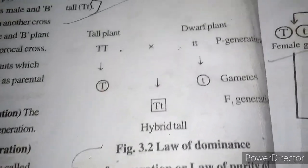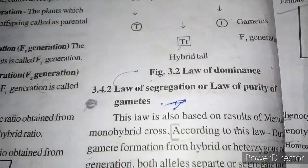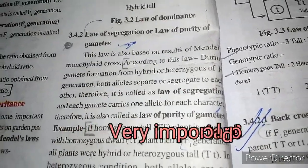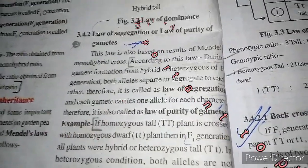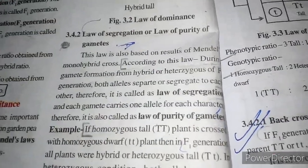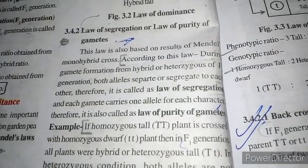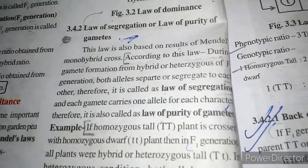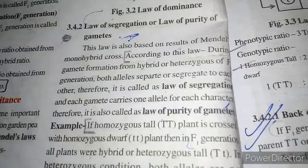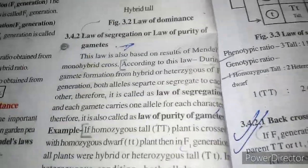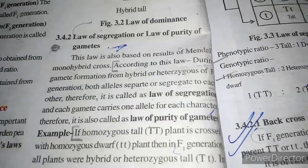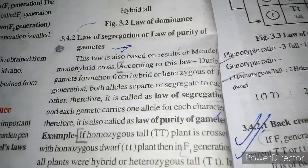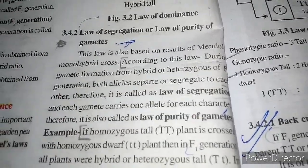Now we will start the law of segregation, also called the law of purity of gametes. This law is also based on the results of Mendel's monohybrid cross — a single contrasting character. According to this law, during gamete formation from a hybrid or heterozygous F1 generation, both alleles separate or segregate from each other. That is why it is called the law of segregation.